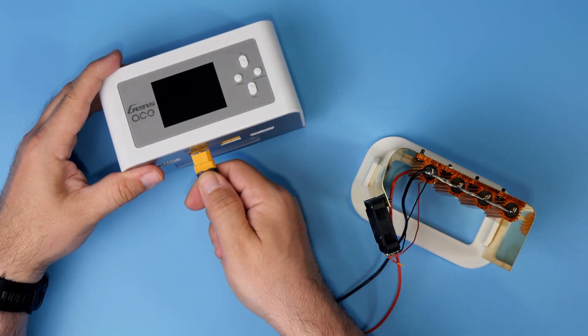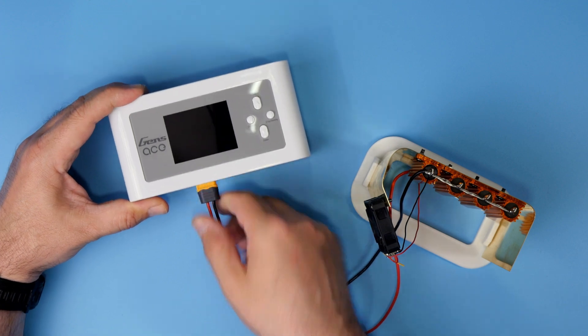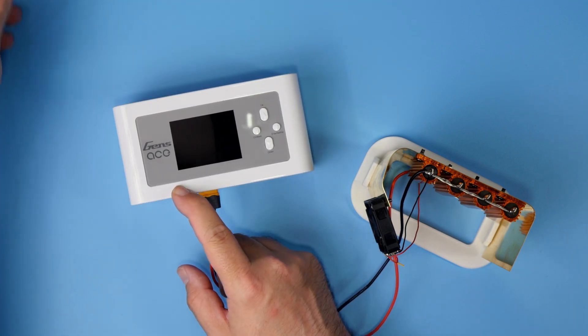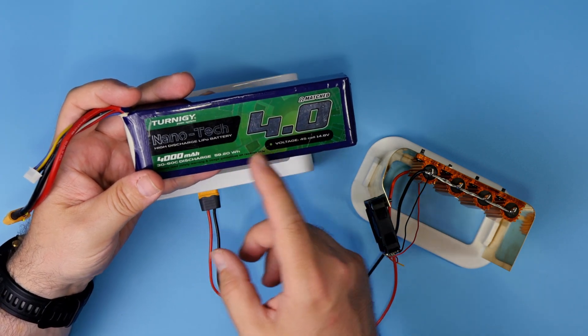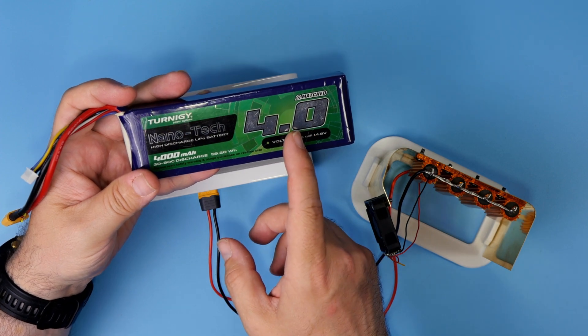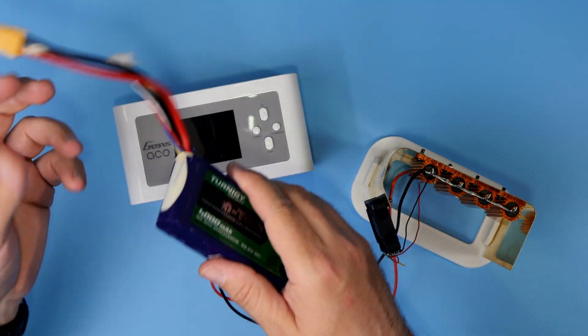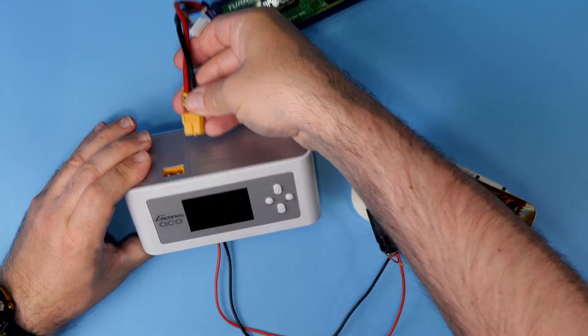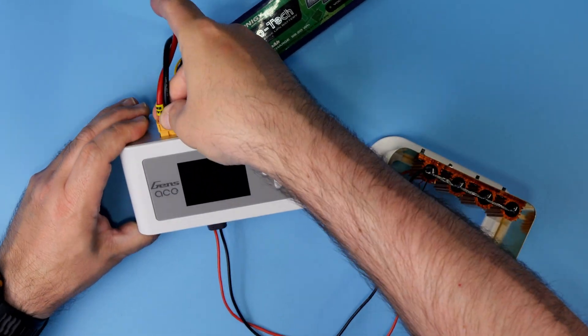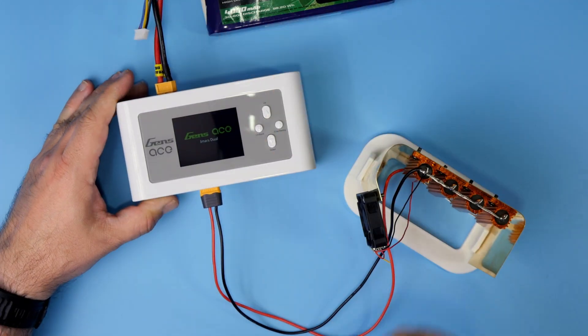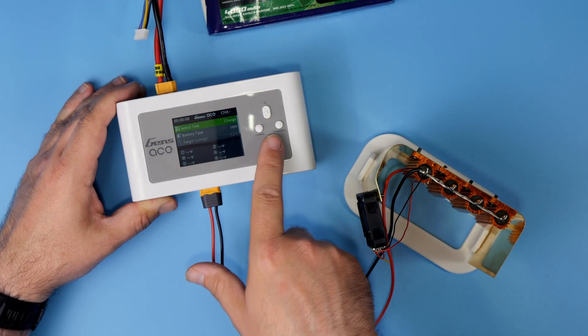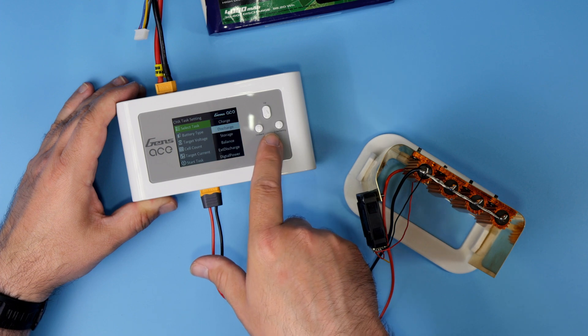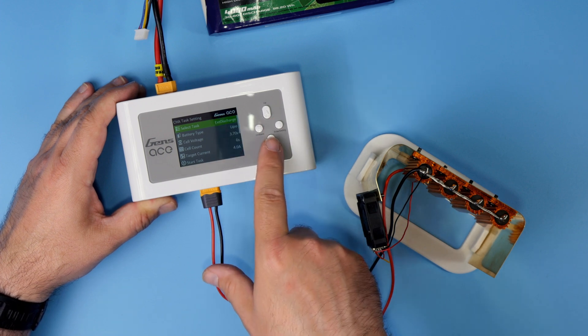So, step one. Let's connect this thing to the channel A on the GANS ACE iMARS Dual. Then let's take a battery. I will be using the 4Ah 4S LiPo I got years ago from Hobby King. And let me connect this thing to the main input on the charger. Let's select channel A and let's choose the option of the external discharge.